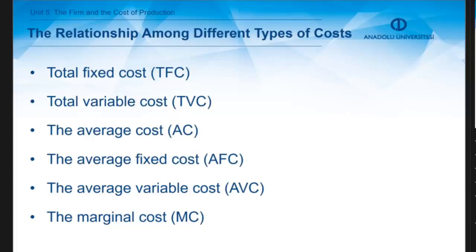It's also important to get familiar with the terminology related to costs during the production process. The first is total fixed cost, which refers to the sum of all fixed costs a firm pays for fixed inputs. The second is total variable cost, the sum of all variable costs. The sum of total fixed cost and total variable cost gives us the total cost. The average cost gives us the cost per unit, while average fixed cost tells us the fixed cost per unit of output.